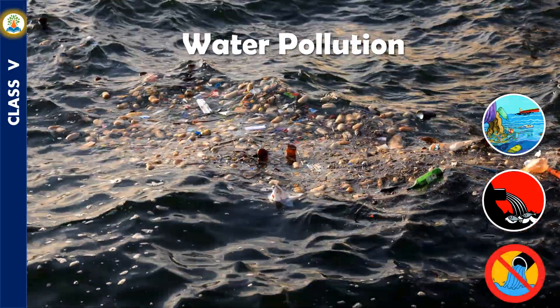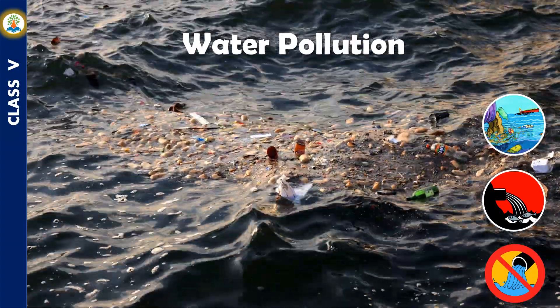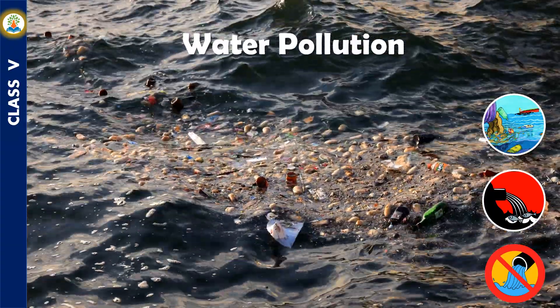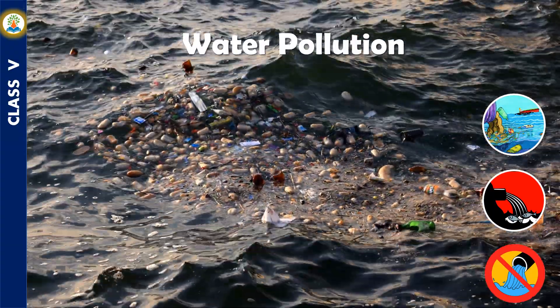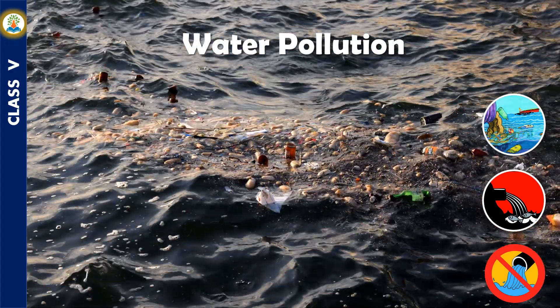Fish living in polluted water get poisoned, which ultimately affects the health of human beings. To prevent water pollution, waste from homes should not be thrown into water bodies, and wastewater from factories and homes should be treated before draining into water bodies.